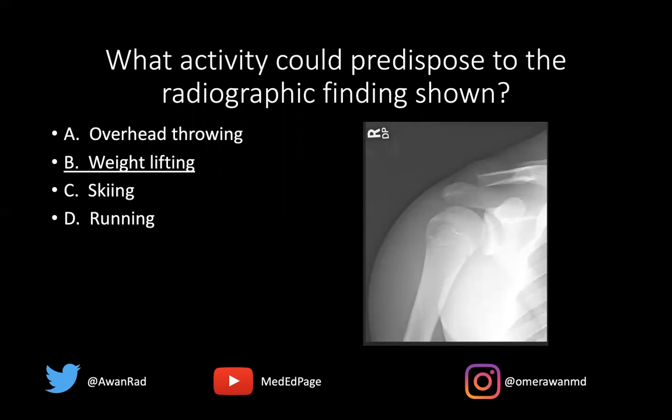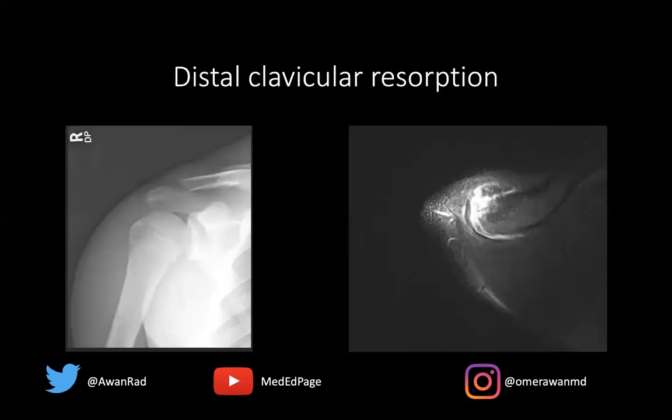Overhead throwing is a risk factor for SLAP tears — superior labral anterior-posterior labral tears in the shoulder. Skiing can be a risk factor for many things, but often ACL injuries in the knee. And running is a major risk factor for stress fractures. But distal clavicular resorption is often seen in weightlifters.